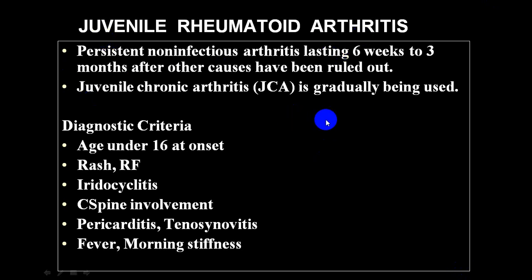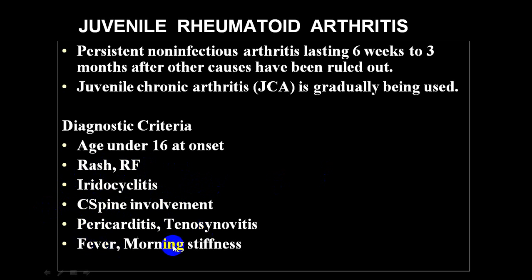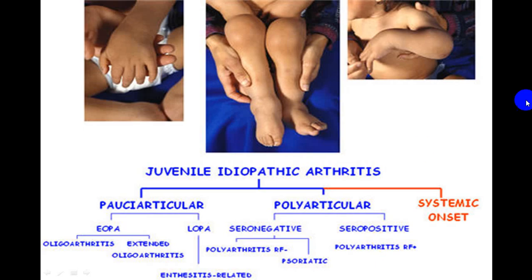Juvenile rheumatoid arthritis is common in children below 16 years and lasts more than six weeks to three months. Features include rash, positive RA factor, extra-articular manifestations like iridocyclitis, and cervical spine involvement. Extra-articular features also include pericarditis, tenosynovitis, fever, and morning stiffness. It is called juvenile chronic arthritis and often involves large joints like knee, ankle, and elbow.